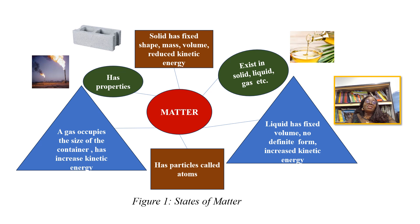The solid has a fixed shape, it has mass, and it has volume. It has reduced kinetic energy. The shape of every solid is fixed — like we have here an example of a model block, you can see that it is fixed. It has mass, it has volume, and it has reduced kinetic energy. When heat is applied, the kinetic energy forces are smaller — that's why we say reduced, compared to the liquid and the gas.